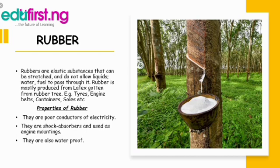What are the properties of rubber? They are poor conductors of electricity. They are shock absorbers, meaning they are placed under machines in order to reduce the shock that the machine incurs when it is working and shaking. They are also waterproof — as mentioned earlier, they don't allow liquid through them and are not porous.